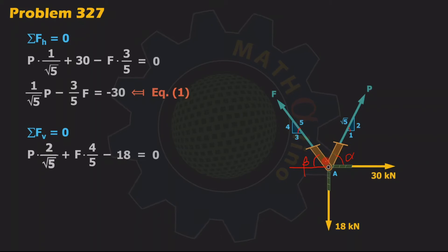Rearrange: 2 over square root of 5 of P plus 4 fifth of F. Transpose this negative 18 to the right side of the equation, that will become positive 18, and this will serve as our equation number 2.